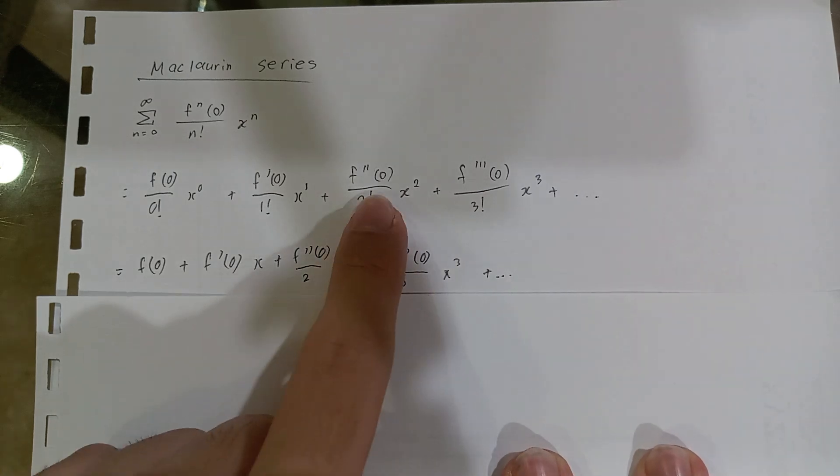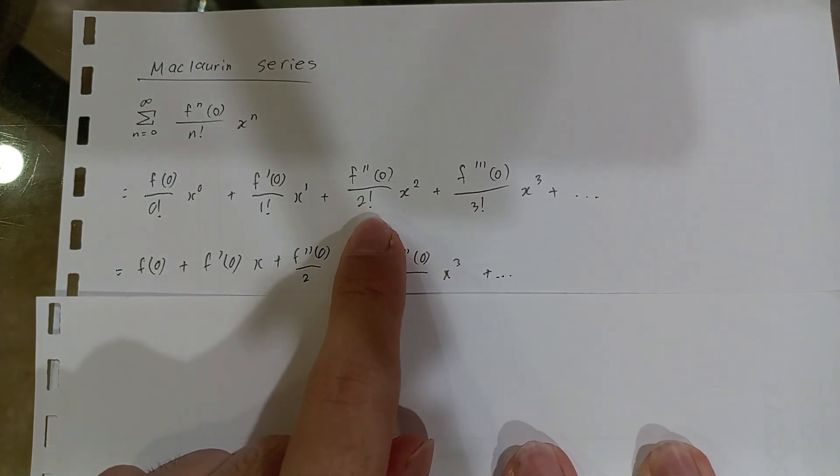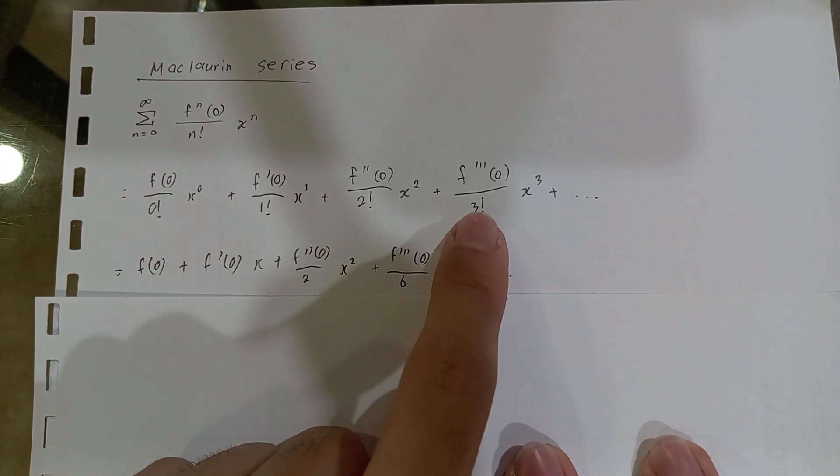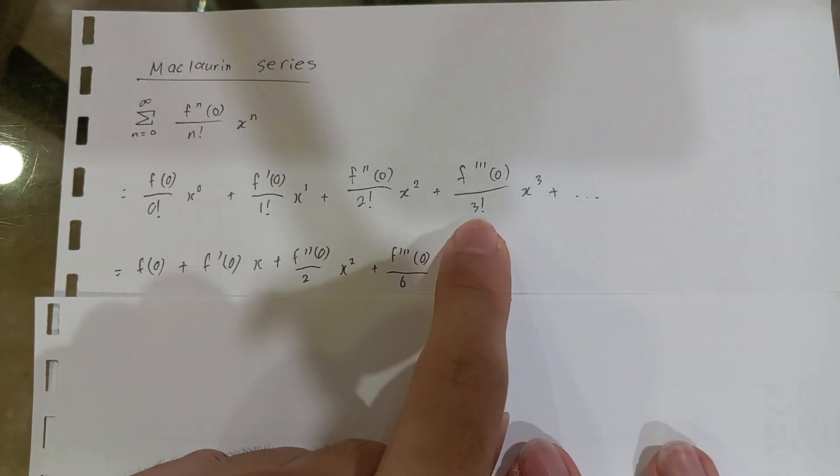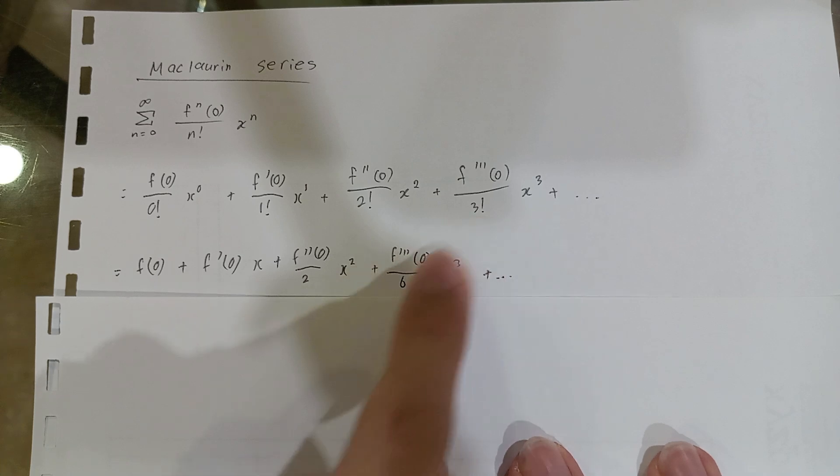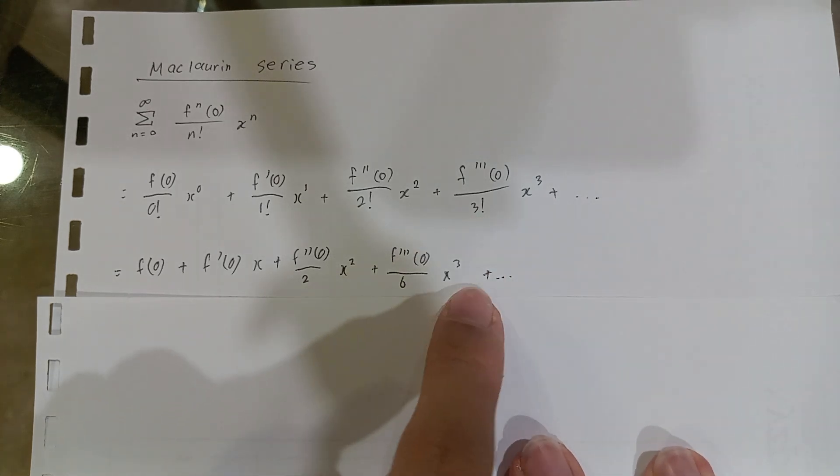The third term is similar - 2 factorial equals 2 times 1, which is 2. For the fourth term, 3 factorial is 3 times 2 times 1, which equals 6, and so on.